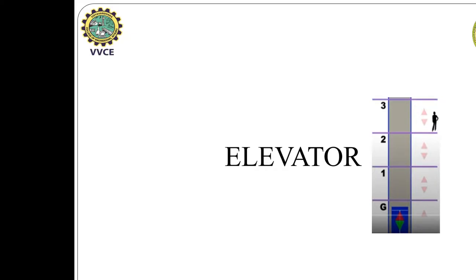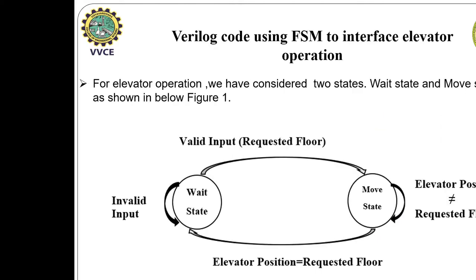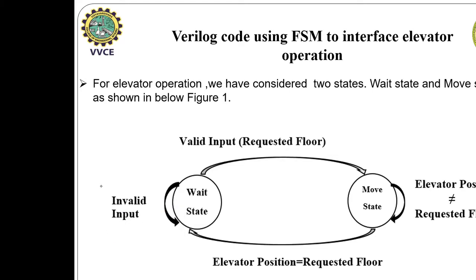Today's session deals with the FPGA implementation of Elevator Interface with Verilog HDL. To begin with the Verilog code using FSM to interface elevator operation, we require two states: the wait state and the move state.